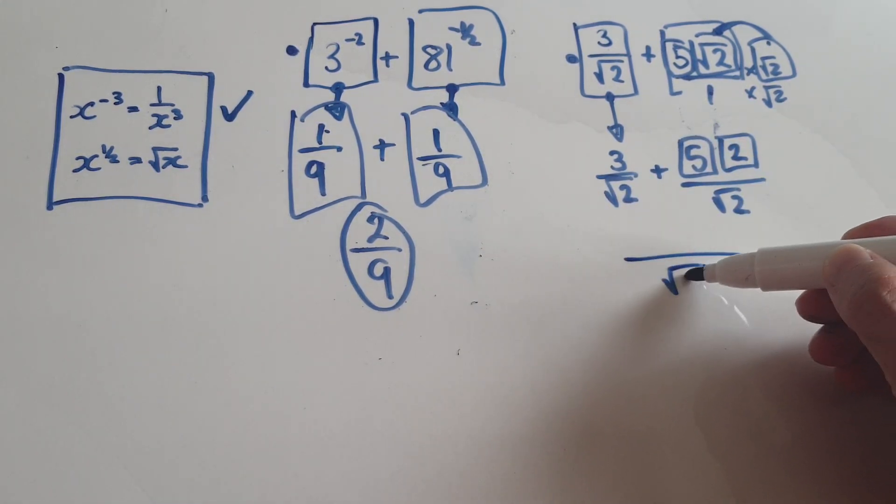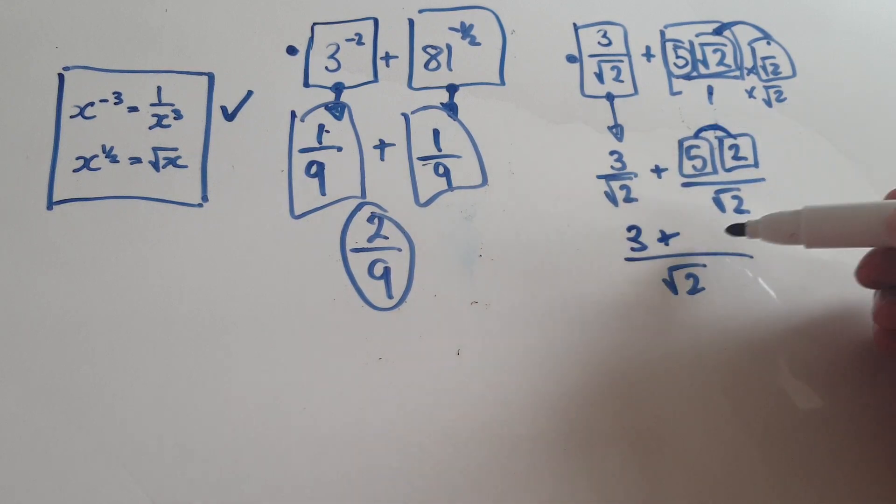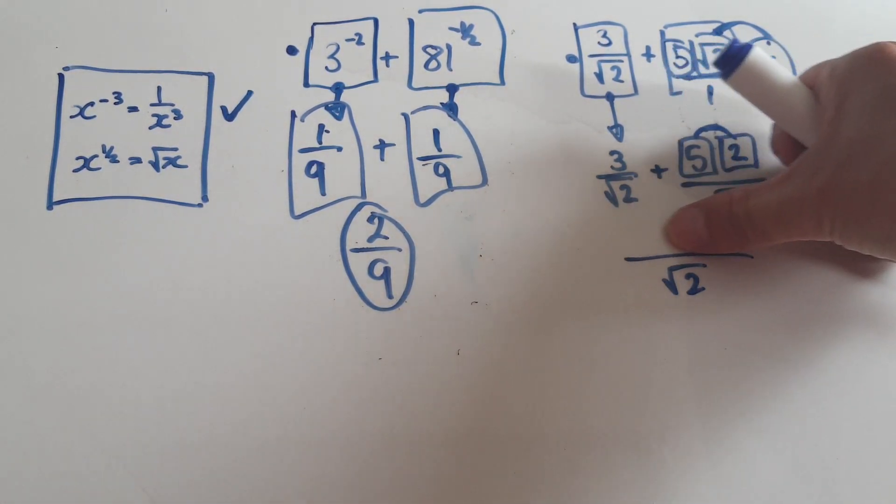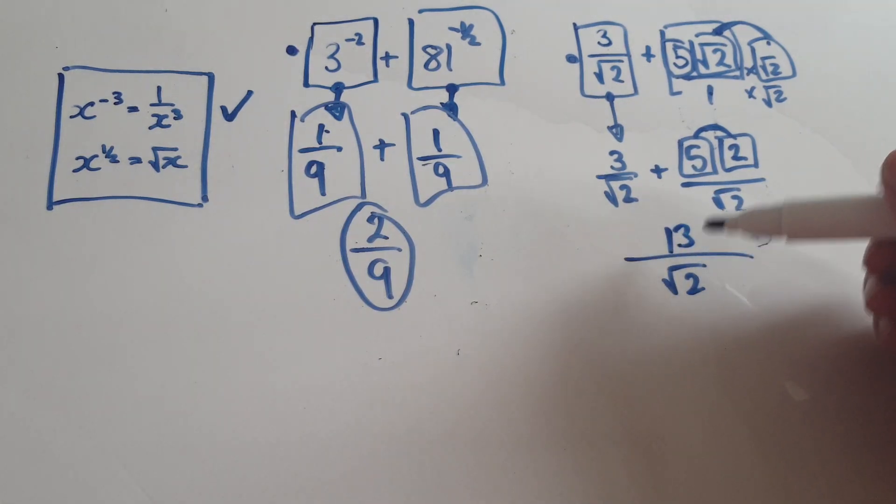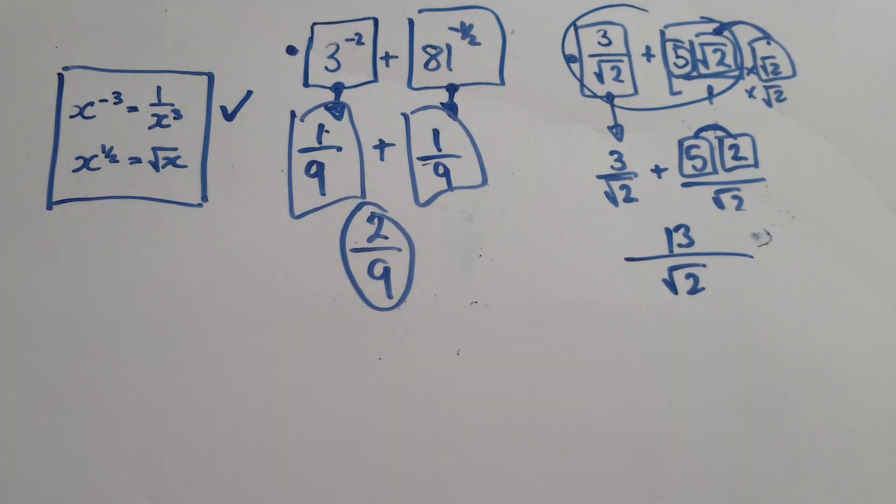That would be, the denominator stays the same. And then it just really boils down to 3 plus, merging these two together would be 10. So 3 plus 10 is 13. The final answer would be 13 over root 2. So this whole thing here equals 13 over root 2.